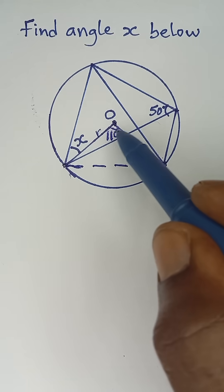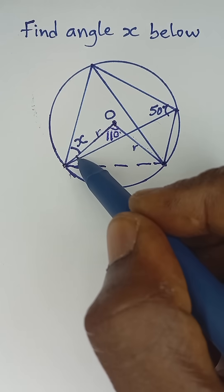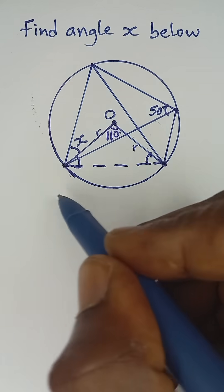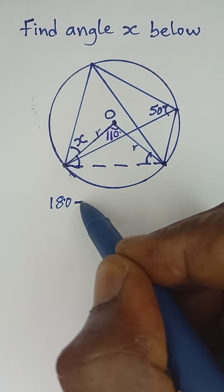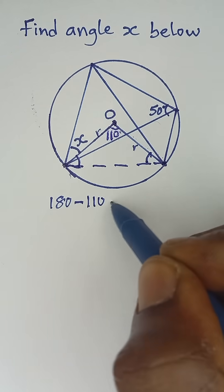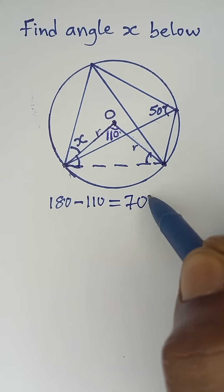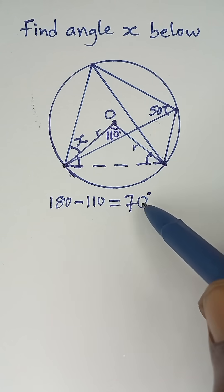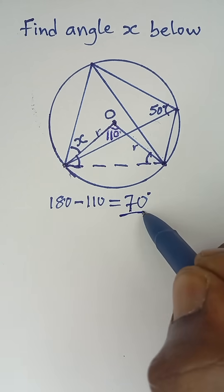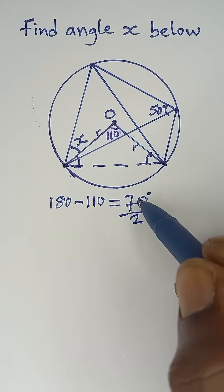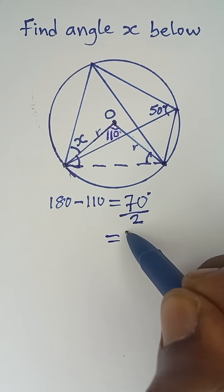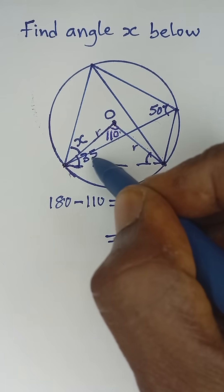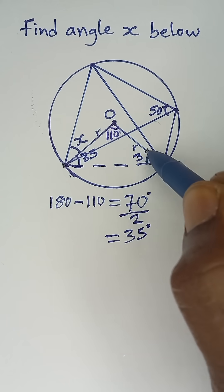Since this angle is 110°, the sum of the other two angles should be 180° minus 110°, which gives us 70°. So the sum of these two base angles is 70°, and each of them has to be 70 divided by 2, giving us 35°. So this angle is 35° and this angle is also 35°.